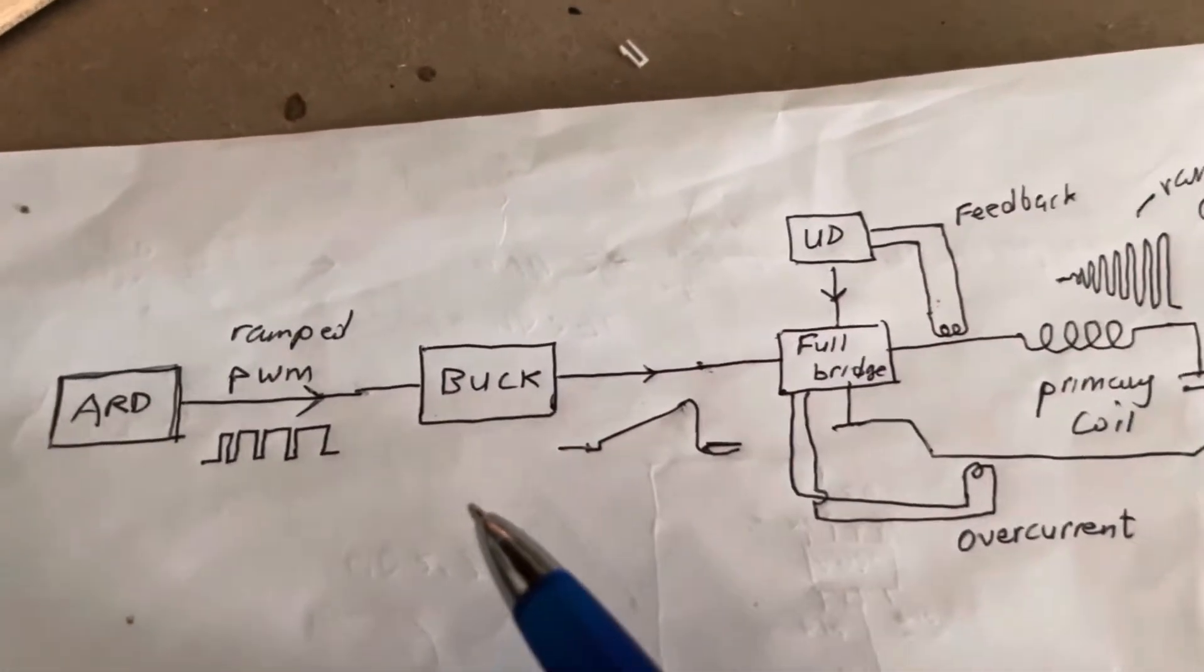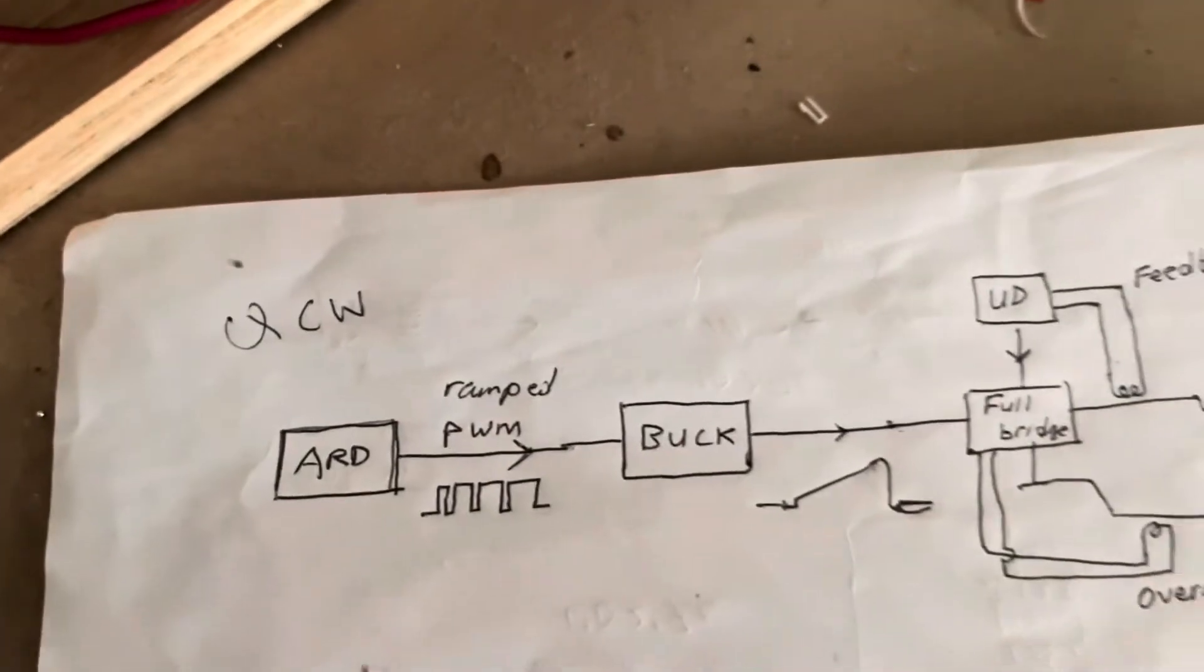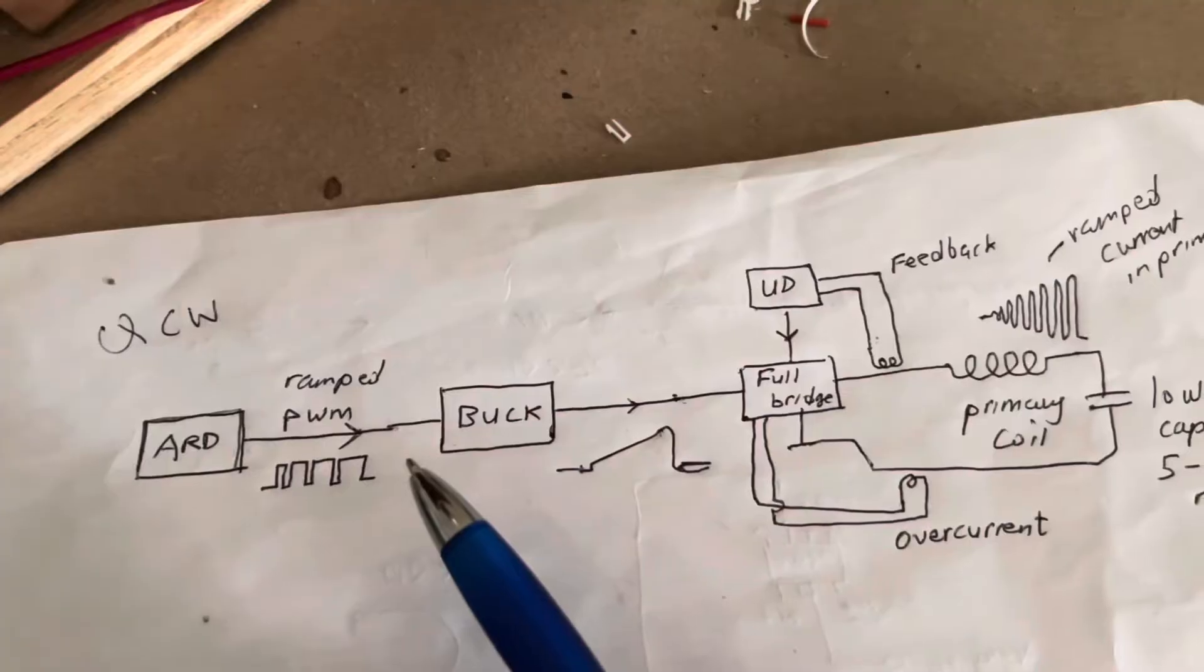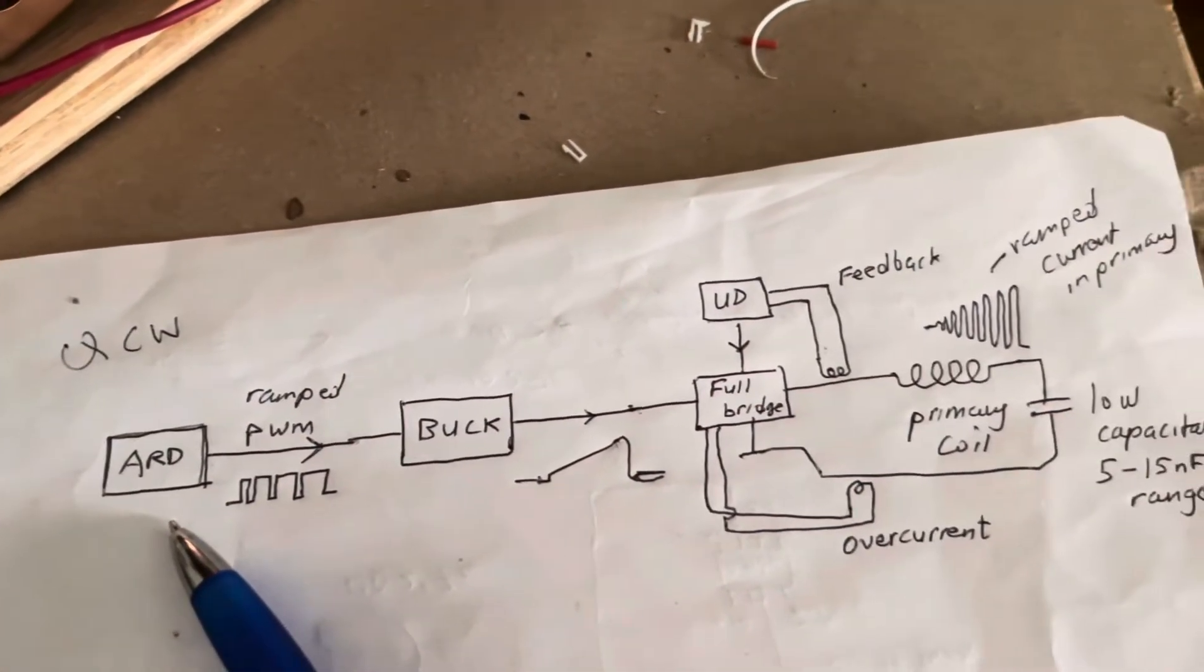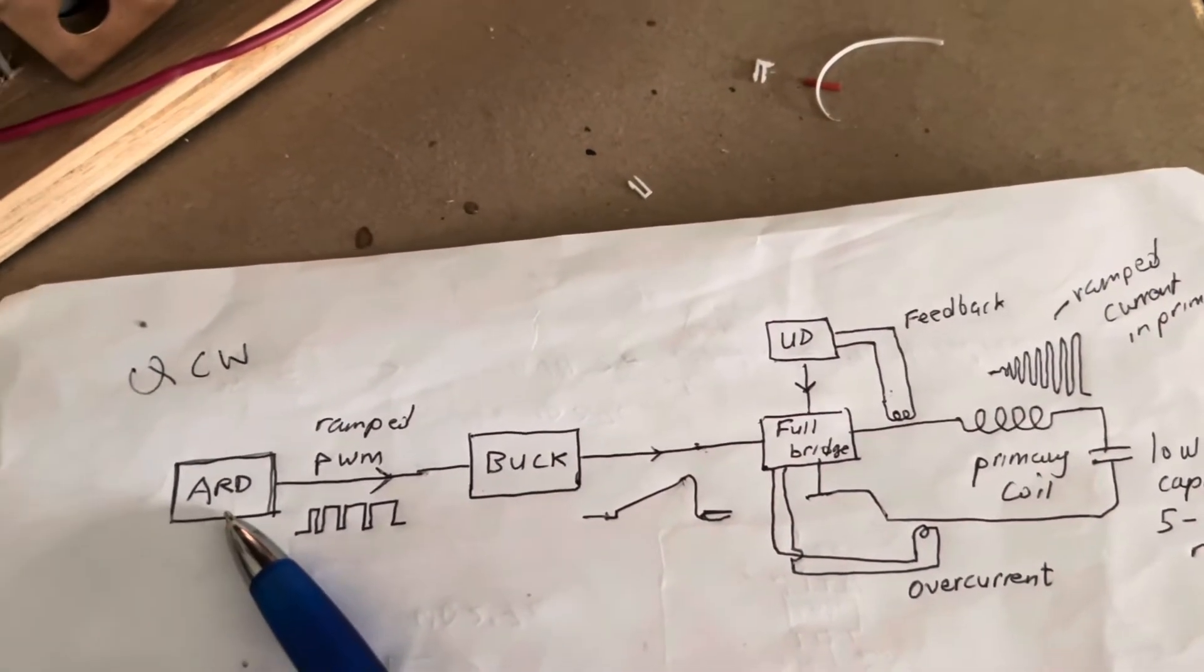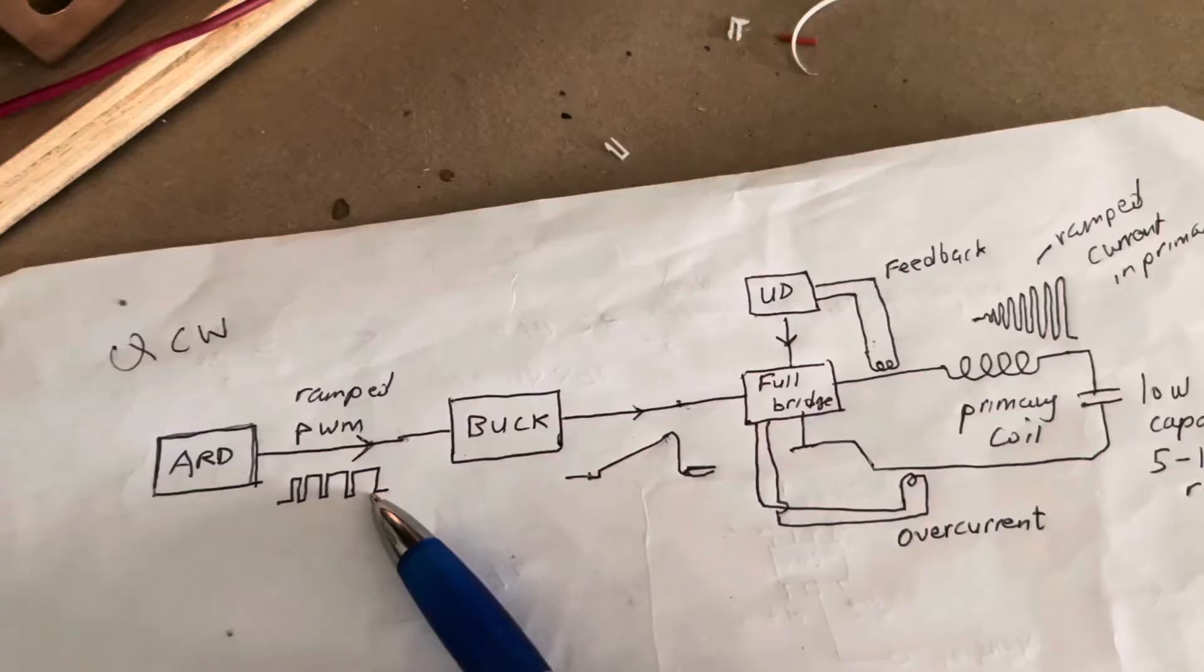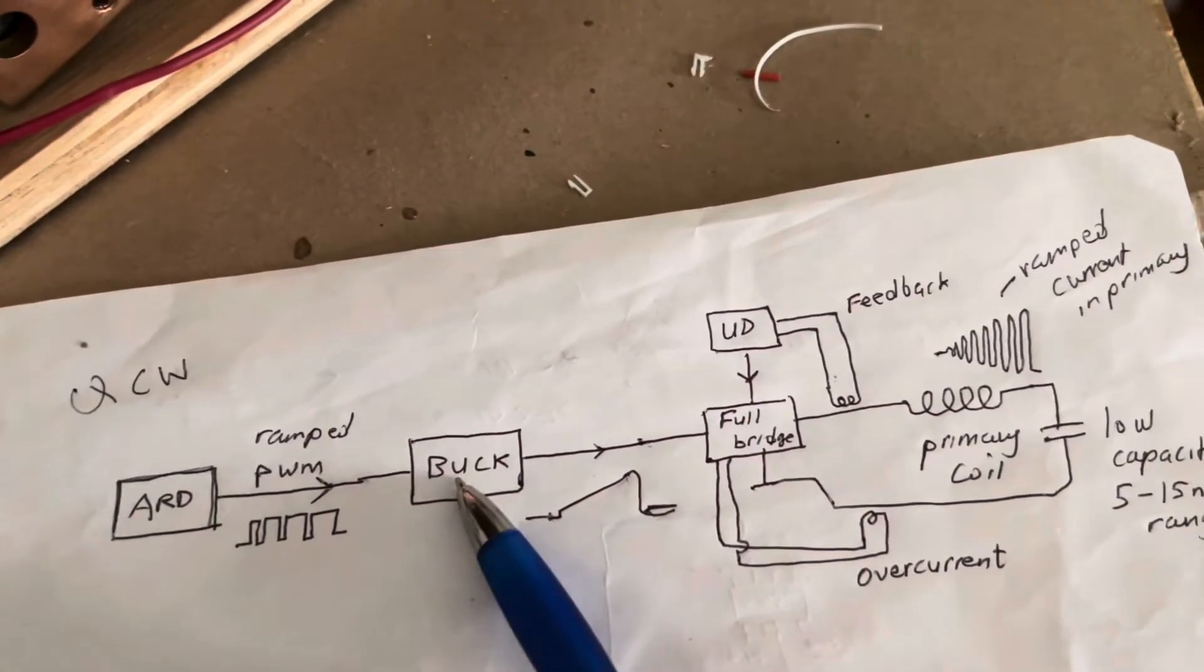So this is a schematic of how a QCW or quasi-resonant continuous wave Tesla coil works. Typically these coils need some sort of microprocessor, and the most commonly used microprocessor in most projects out there is the Arduino, which can be programmed to generate a ramped pulse width modulated signal which looks something like this.